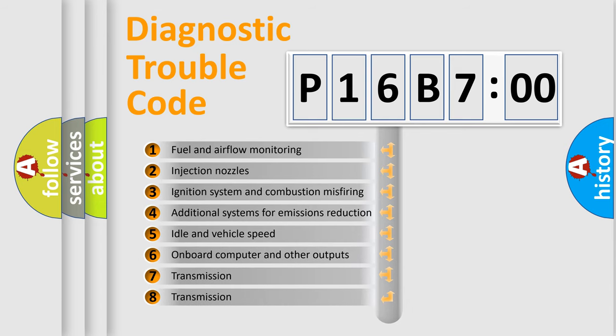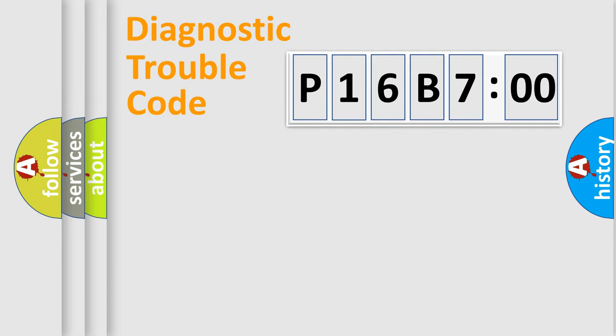The third character specifies a subset of errors. The distribution shown is valid only for the standardized DTC code. Only the last two characters define the specific fault of the group.